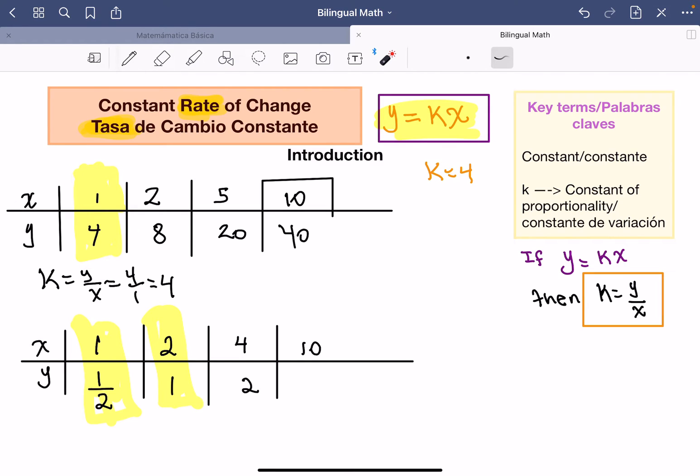Siempre es importante empezar cuando ven el 1. Tienen 1, x es igual a 1. Entonces reemplazamos donde vemos la x. x es igual a 1. 1 por qué número me da 4. 1 por qué número? 1 por 4. Por lo tanto, la k debería ser 4.